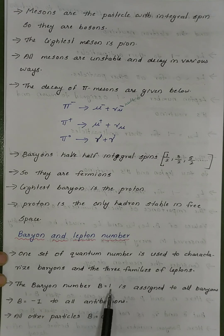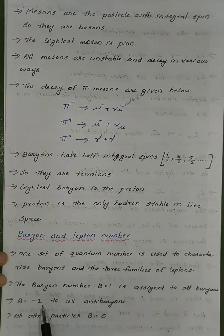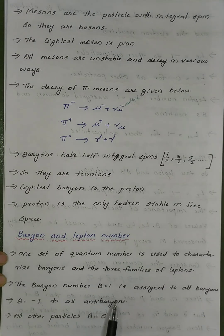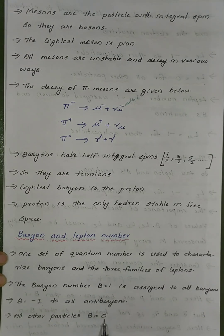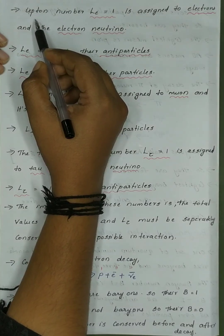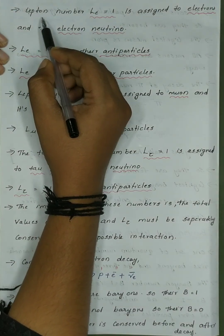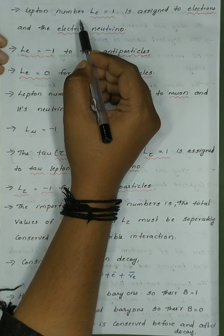For Antibaryons, the Baryon number is minus 1. For Leptons and other particles, the Baryon number is 0. We now need to assign the Lepton numbers.